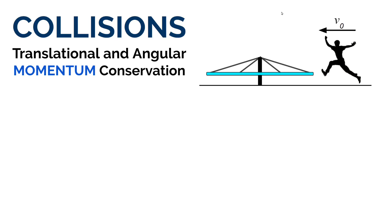Today we're going to come back to a topic we've previously discussed, which is collisions. We've talked about this already in terms of linear collisions — two cars or objects that collide in a straight line path. We call this translational momentum. When thinking about collisions in terms of linear momentum, momentum for the system is conserved if there are no outside net forces.